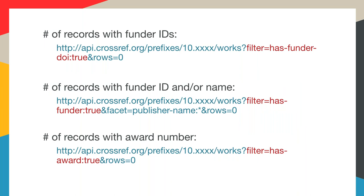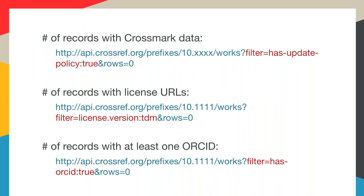You can also do fairly specific queries. For example, if you're registering funding information with Crossref, you can look up all of your DOIs with funder identifiers, or look up the number of records with a funder identifier and funder name, or look up the number of records with award numbers. You can also see how many of your records have Crossmark information, how many have license information, and how many have at least one ORCID ID included in the metadata.